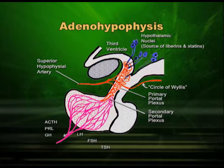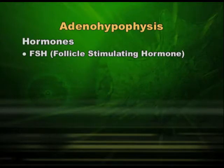The adenohypophysis is the source of six important hormones which are synthesized and secreted by the anterior lobe itself. That means, inside the anterior lobe you have six different types of cells producing six different types of hormones. The message comes from the hypothalamus in the form of releasing factors, or in the case of prolactin, in the form of an inhibitory factor. The hormones — if I name them — FSH, the follicle stimulating hormone.